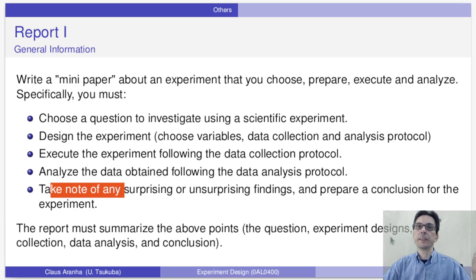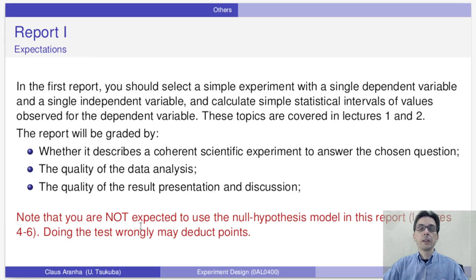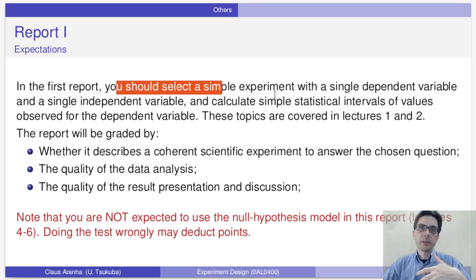The report that you write must summarize these points: the question, the design, the collection of data, the analysis of data, and the conclusion. For report one, you should select a simple experiment, for example using a single dependent variable and a single independent variable, and then calculate simple statistic intervals of the values observed for the independent variable. These topics, like what is a variable, dependent variable, what are statistic intervals, are covered in lectures one and two.